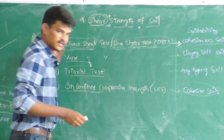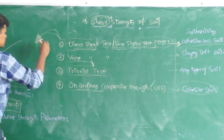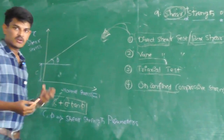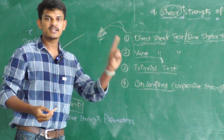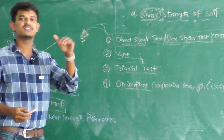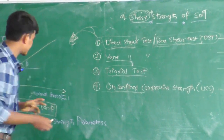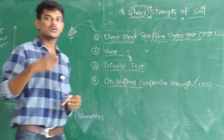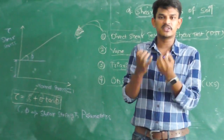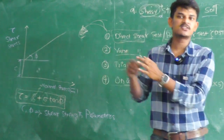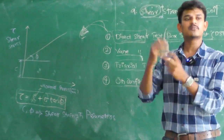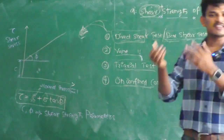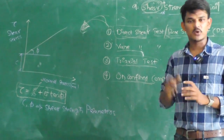While taking the direct shear test, the shear strength basically depends on two major factors. One is the type of soil — whether it is cohesive or non-cohesive. The second one is the frictional resistance. If there is more cohesion, we call it cohesive soil, and if there is less or no cohesion, then we call it cohesionless soil.